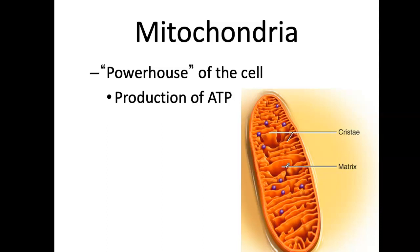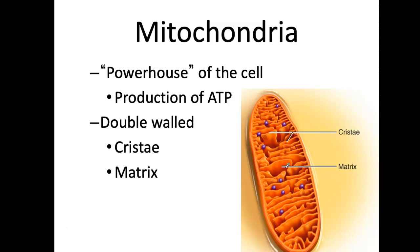A muscle is going to have a lot of mitochondria if it wants to exercise and be a well-functioning muscle. The muscle of an athlete is going to have more mitochondria than the muscle of a couch potato. This double-walled structure has cristae — which are the walls — and the matrix is everything in between.